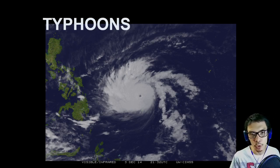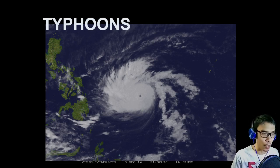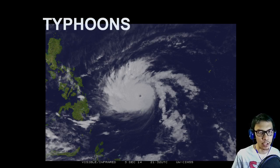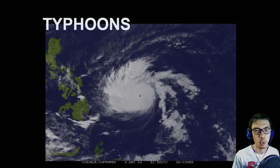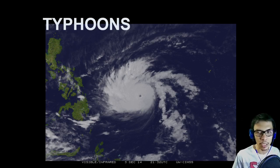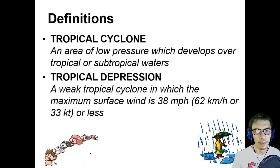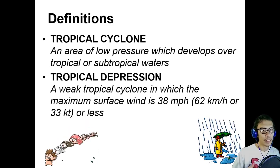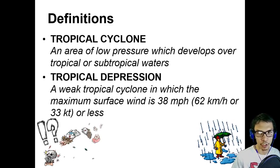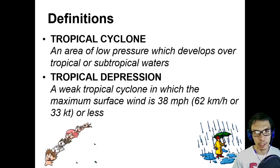Today in this video we will discuss how they are formed, where they are formed, what things are needed in order to form a typhoon, and lastly what are the effects of a typhoon on the places they pass through.